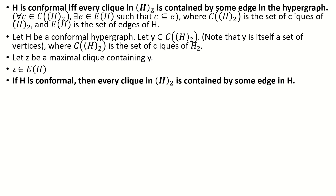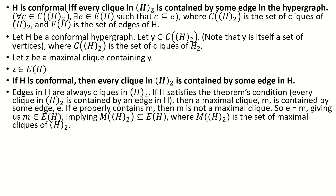Now why is the other direction of our theorem true? The fundamental idea to keep in mind is that edges in the hypergraph are always cliques in the two-section. Maximal cliques cannot be contained by other cliques, and maximal edges cannot be contained by other edges. Now, if we have a hypergraph h that satisfies the condition that every clique in the two-section is contained by some edge in h, and we have any maximal clique m in the two-section, then whatever edge contains m must be a maximal by inclusion edge, for if it weren't, m would not be a maximal clique. Not only does that edge contain m, it has to be exactly m, because if that edge and m were not equal, then there would be a clique larger than m that contains m — a contradiction.